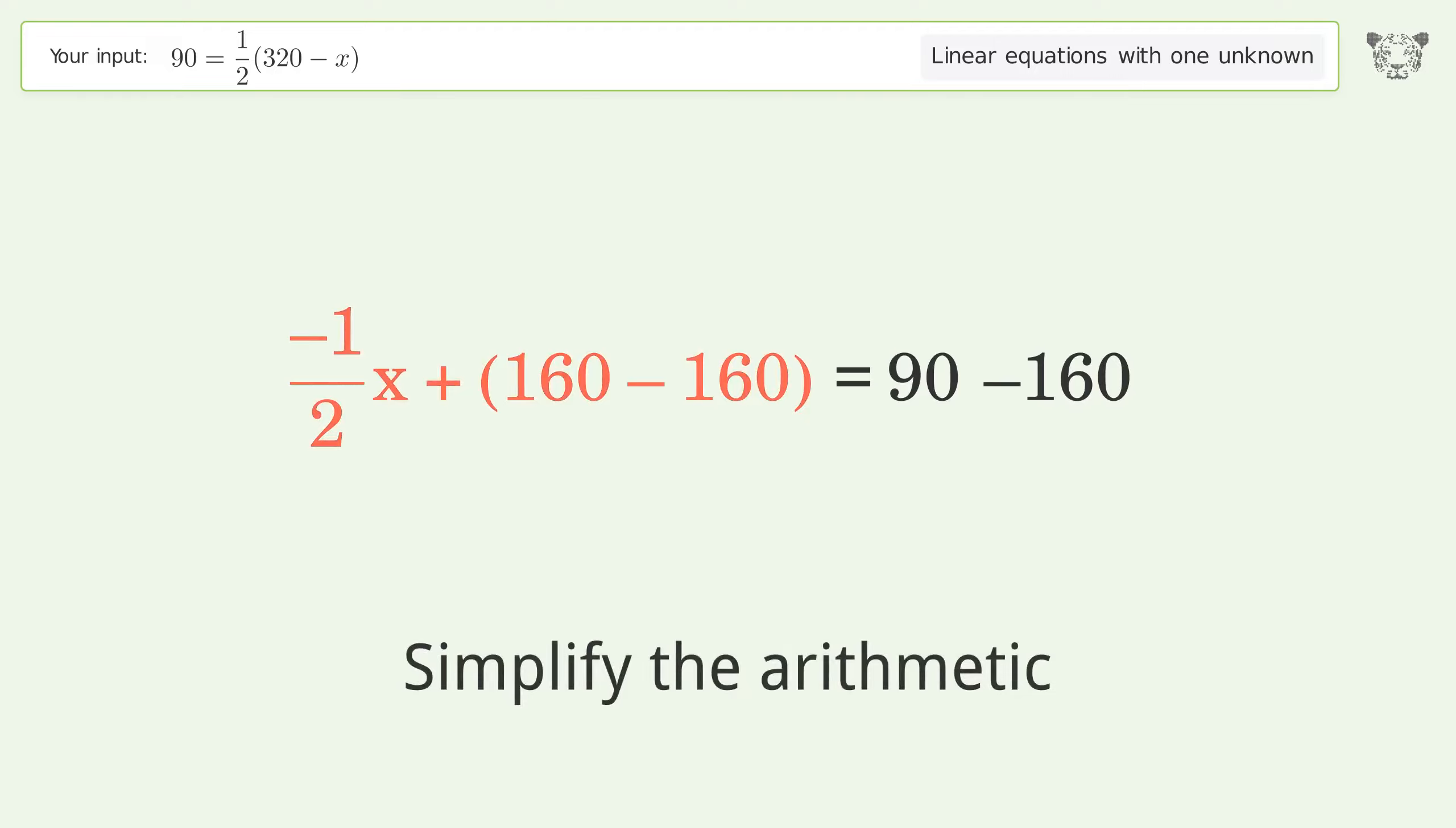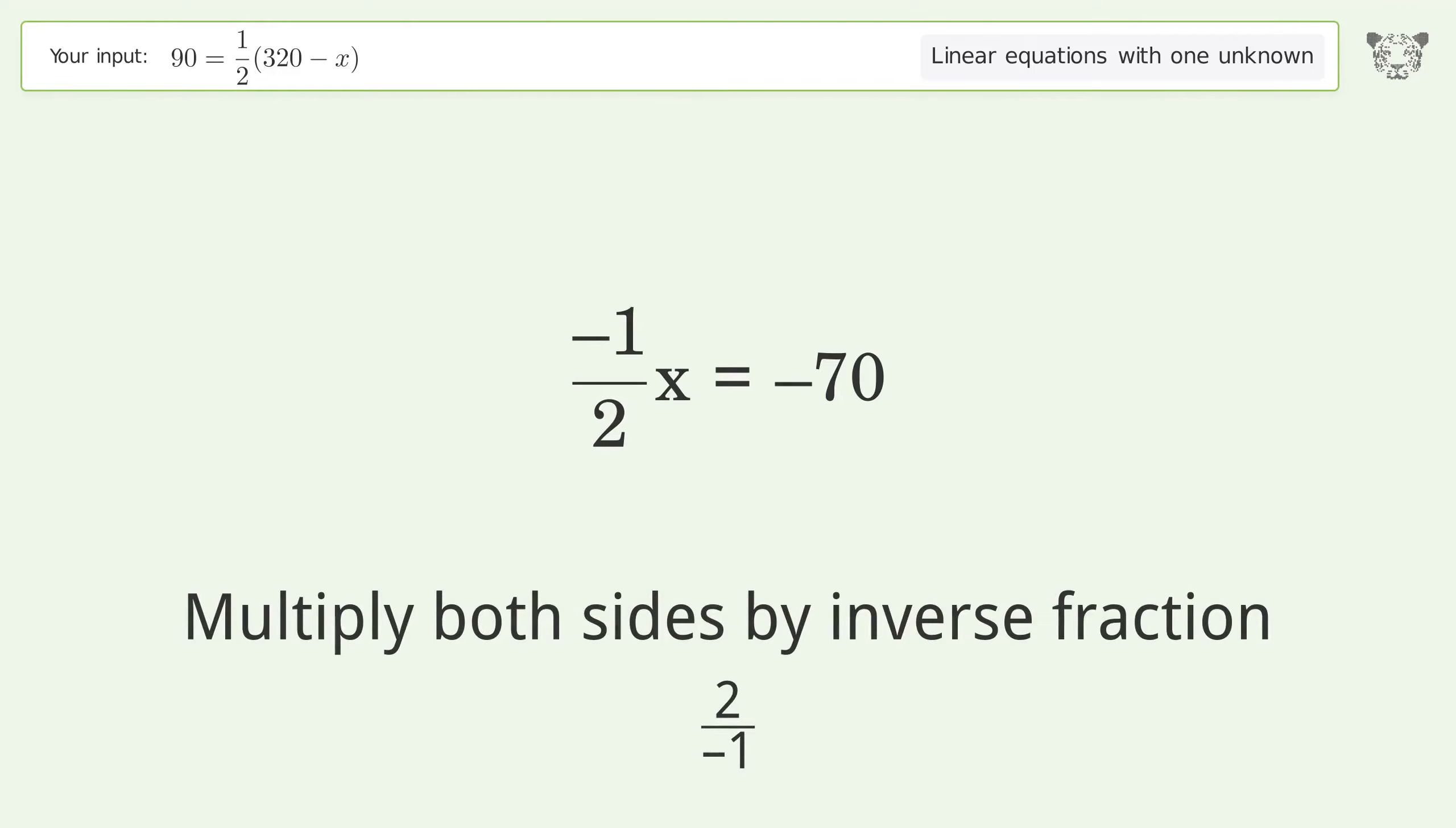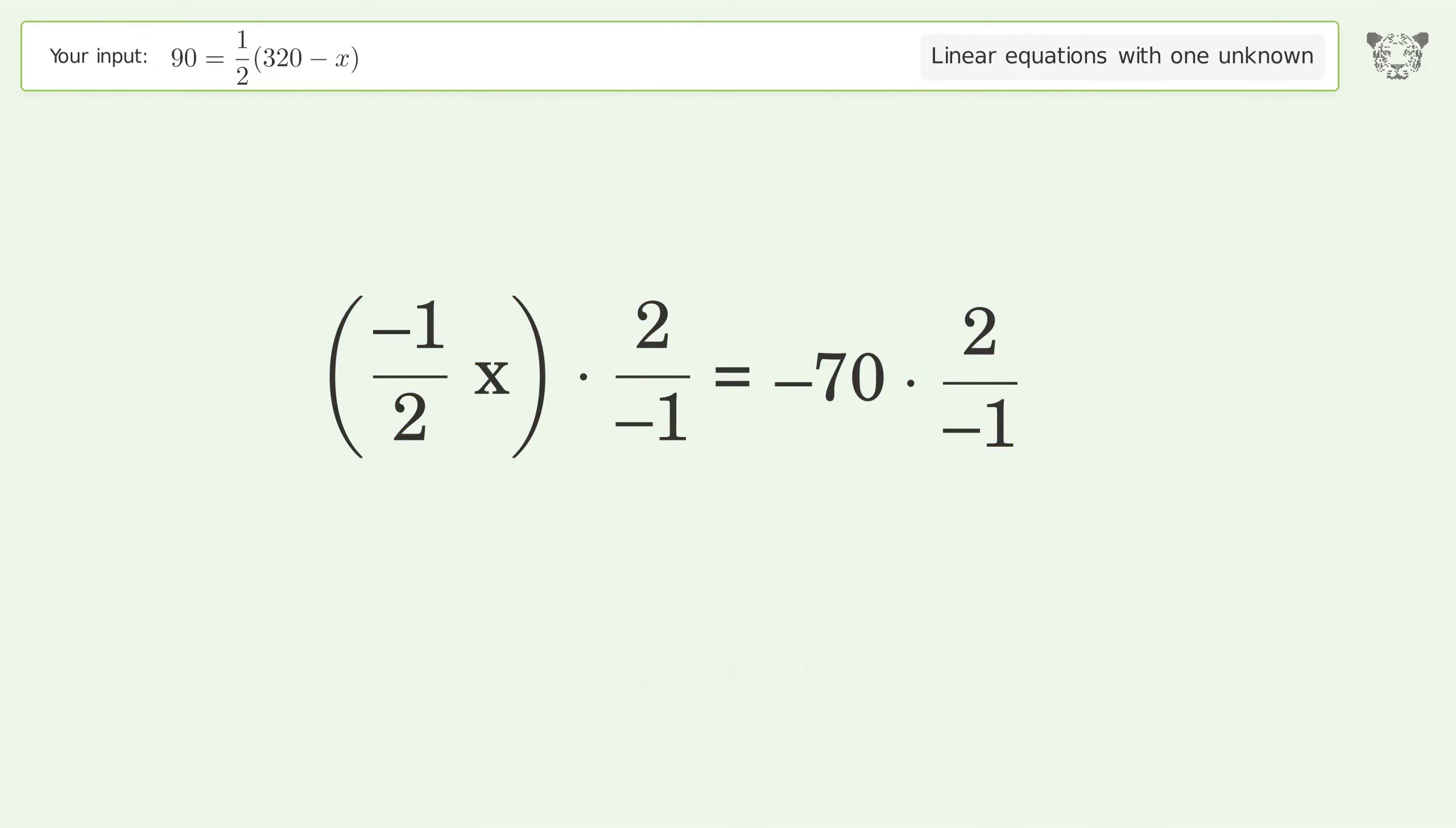Group like terms. Simplify the arithmetic. Isolate the x. Multiply both sides by the inverse fraction, 2 over negative 1.